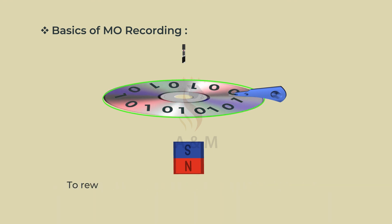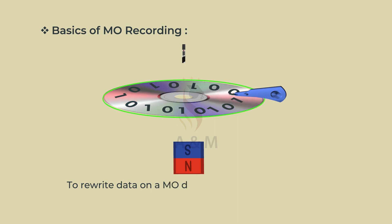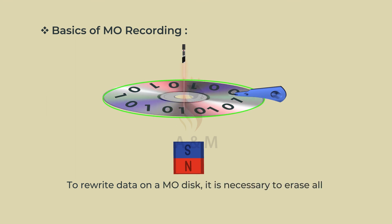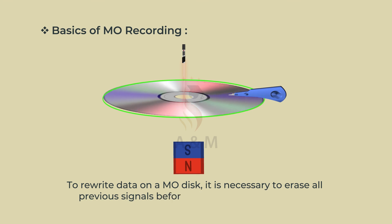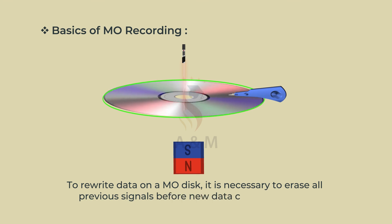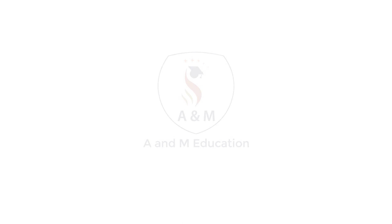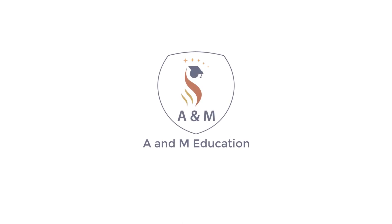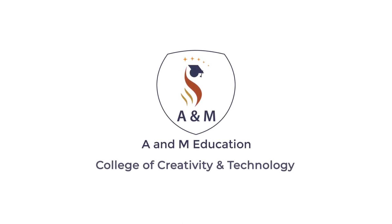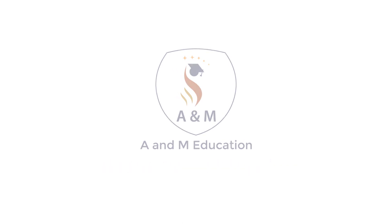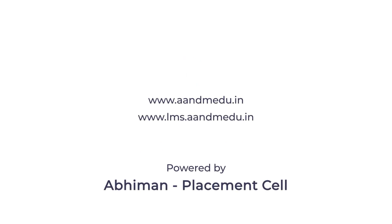To rewrite the data on an MO disk, it is necessary to erase all the previous signals before new data can be recorded.